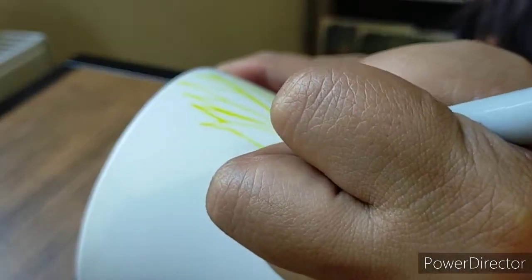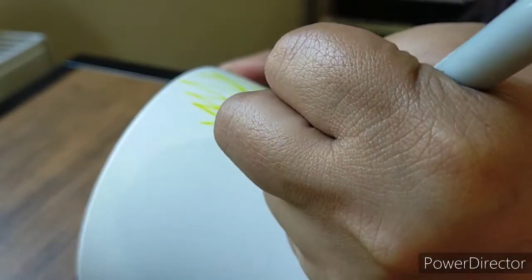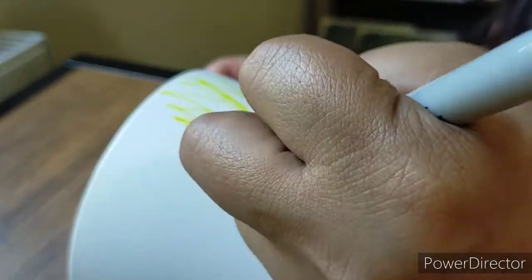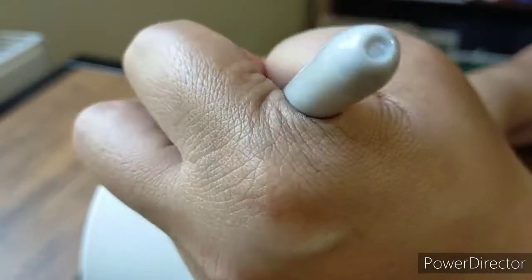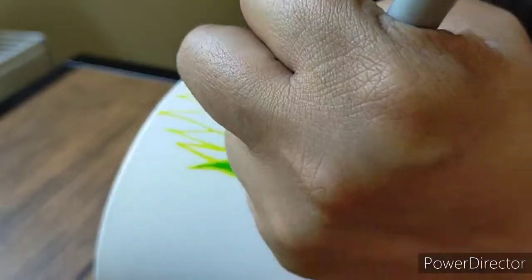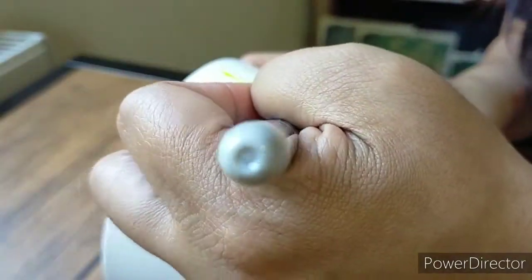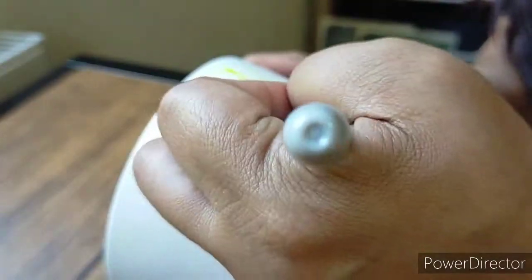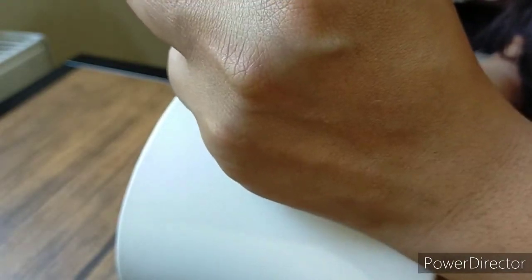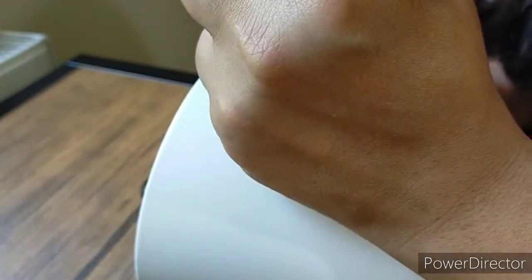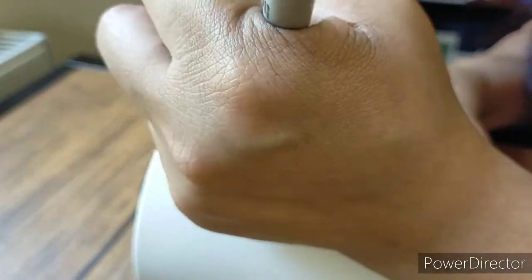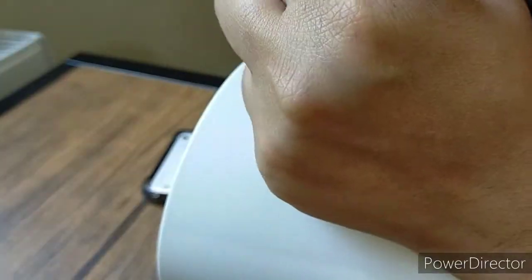After drawing the outline I use the lighter shade of green to fill up the spaces in between the yellow. Just don't mind my hand, it's blocking the camera.